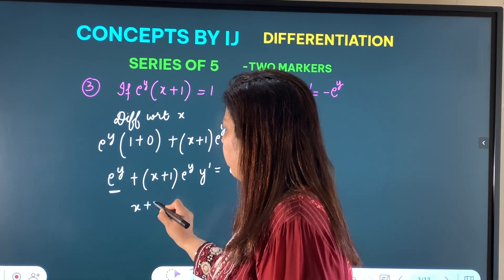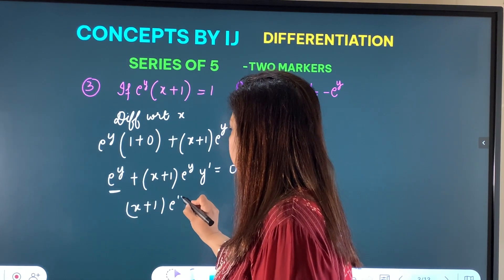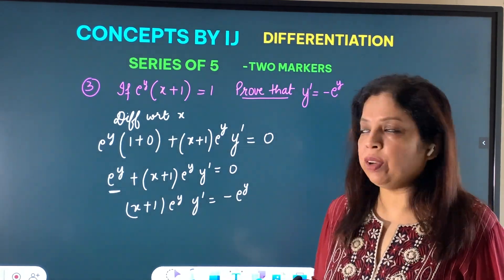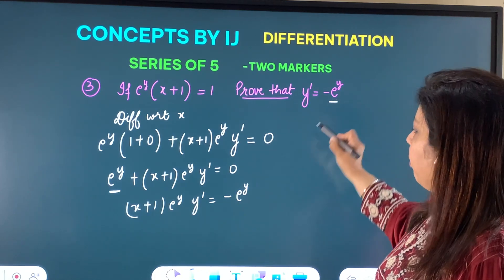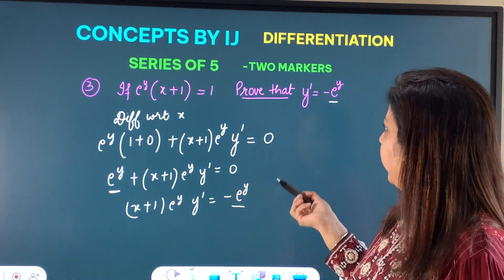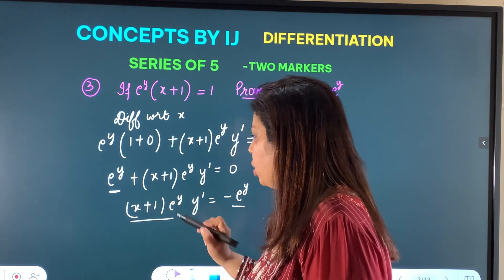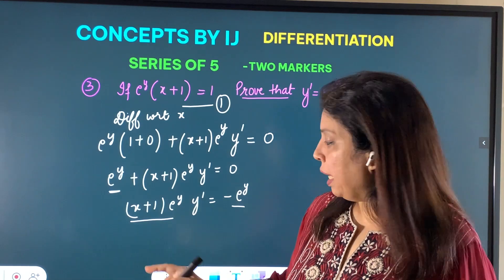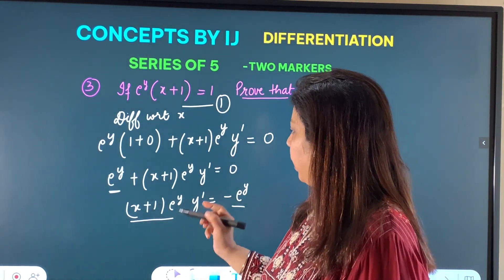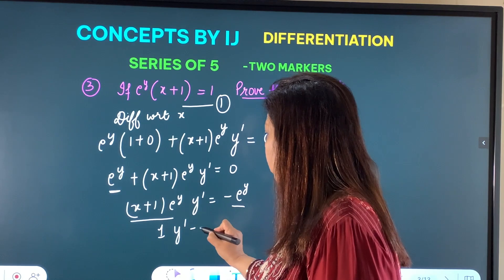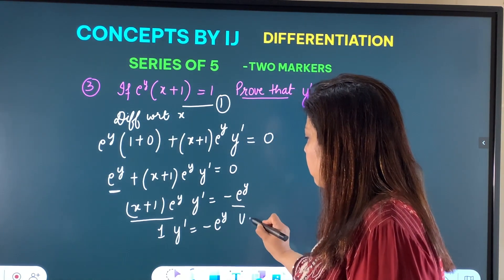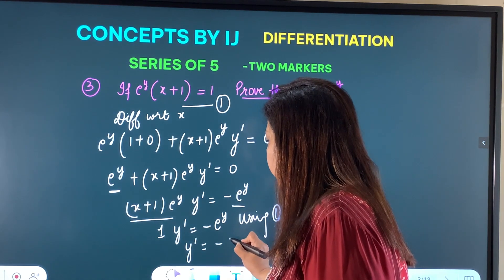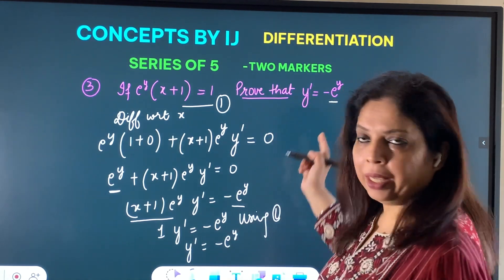Taking e^y to the other side: (x+1) e^y · y' = −e^y. Now from the original equation e^y(x+1) = 1, so (x+1)e^y = 1. Substituting: 1 · y' = −e^y, using equation 1. Therefore y' = −e^y, which is what we had to prove.